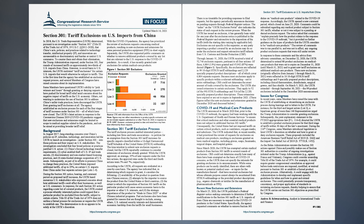The agency has indicated that, in determining which requests to grant, it considers the following: 1. Availability of the product in question from non-Chinese sources; 2. Attempts by the importer to source the product from the United States or third countries; 3. The extent to which the imposition of Section 301 tariffs on the particular product will cause severe economic harm to the importer or other U.S. interests; and 4. The strategic importance of the product to Made in China 2025 or other Chinese industrial programs. Past exclusions also have been granted for reasons that include, among others, U.S. national security interests and demonstrable economic hardship from the tariffs for small businesses. There is no timetable for providing responses to filed requests, but the agency periodically announces decisions on pending requests through Federal Register notices.